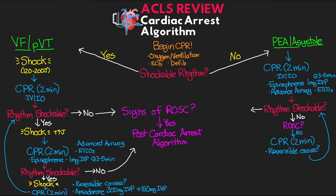If at this point they do have a shockable rhythm, move back over to the left branch. You can go back and forth between these branches and treat appropriately depending on what's going on with your patient. For either branch, we continue in that loop until we either achieve ROSC or the code is called and the patient is declared deceased.